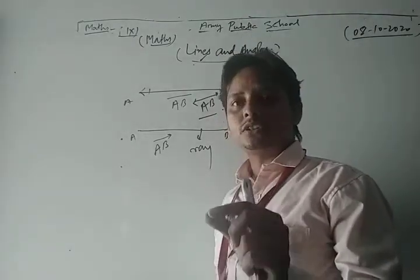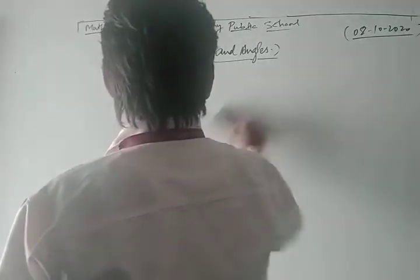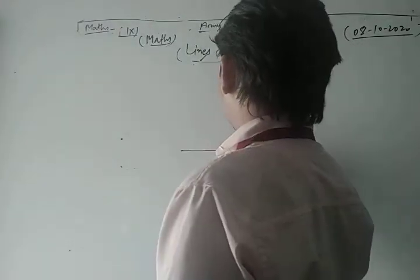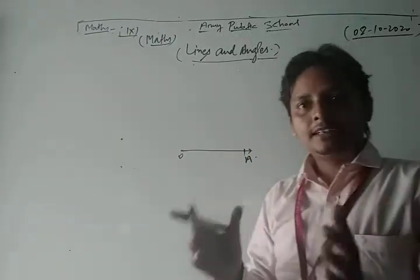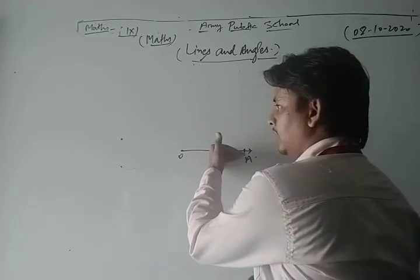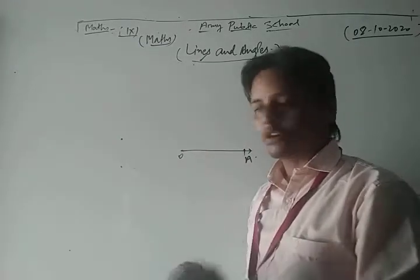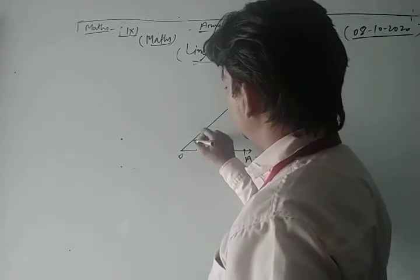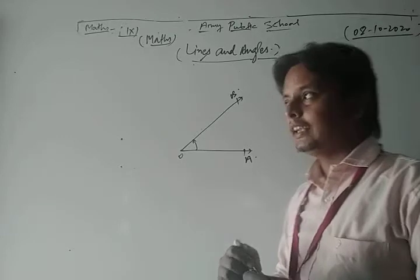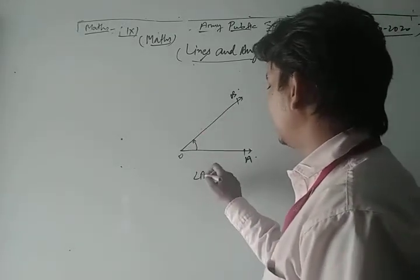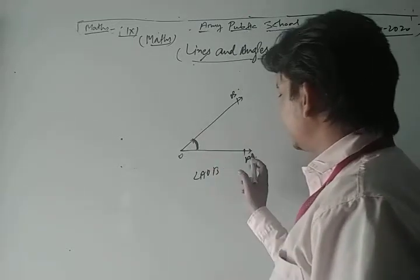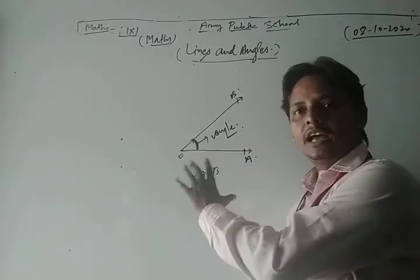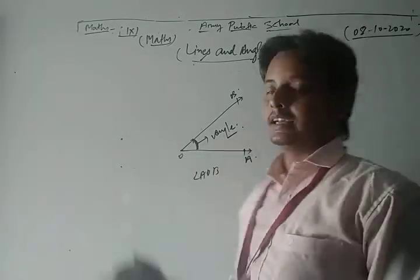Now we discuss some important concepts regarding angles. Suppose we draw ray OA, and if we rotate that ray in the anti-clockwise direction and its final position is OB, then that ray subtends an angle AOB. That rotation of ray OA to OB is called an angle. This is the concept of angle, very important for this chapter.